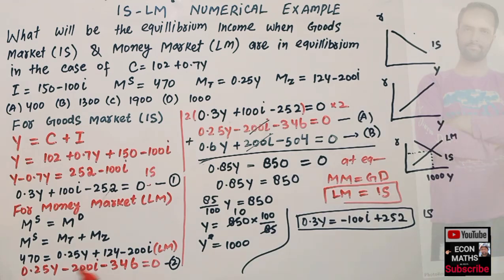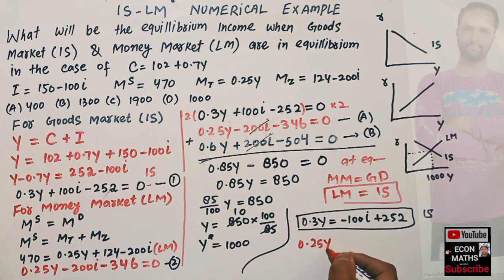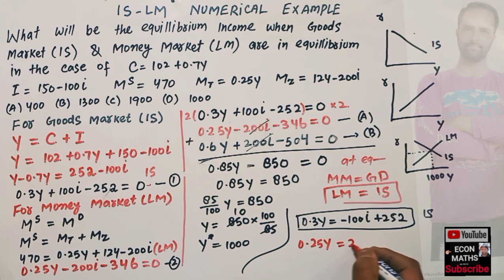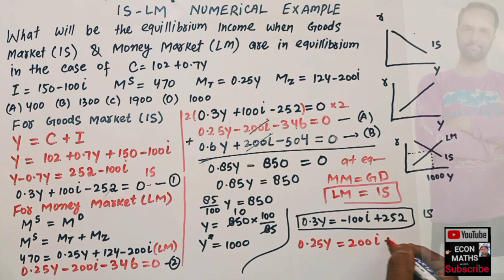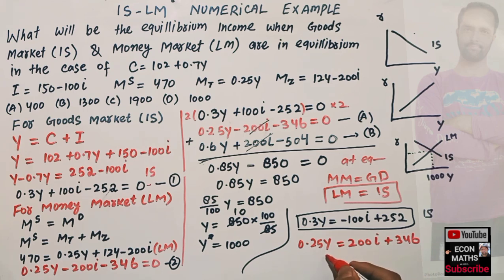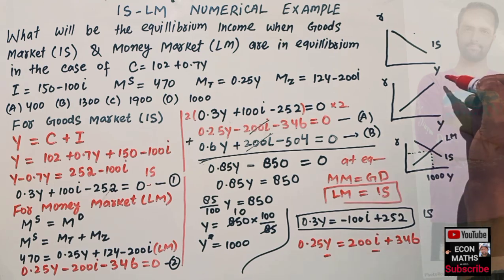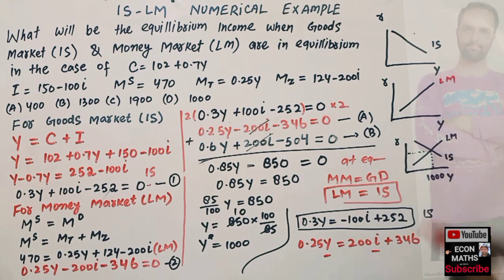Rewriting the LM equation: 0.25Y = -200i + 346, transposing gives a positive relationship between level of income and rate of interest. That is why the LM curve is upward sloping.